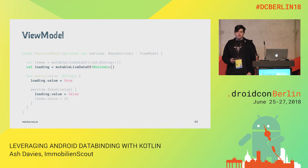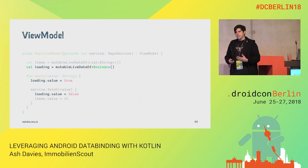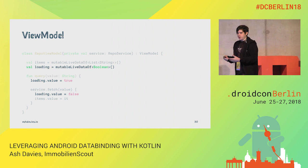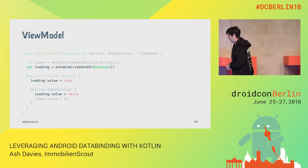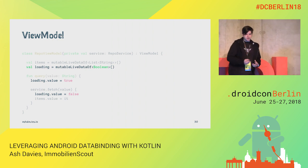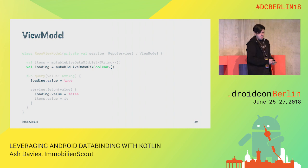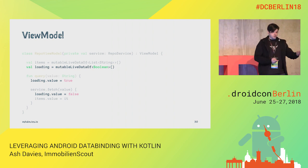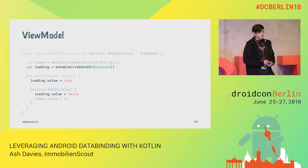We want to show a progress bar to the user to let them know that something's going on in the background, so we don't have a static view. We want to have the progress bar appear and disappear as needed. We introduce a loading LiveData that we can observe, and we set the value to true and false before and after making the request.